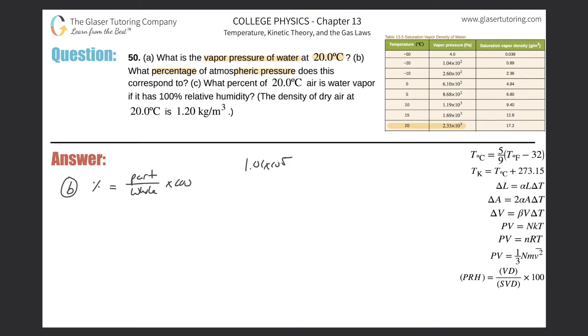Whichever one's smaller you place on top—that's the part. Whichever one's larger you place on the bottom—that's the whole, then multiply by 100. Let's plug it in: 2.33 times 10 to the third divided by 1.013 times 10 to the fifth, multiply that by 100. We get 2.30 percent. So this takes care of letter B.